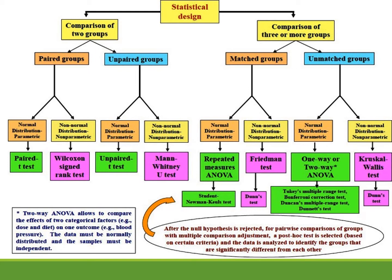This diagram shows a statistical design which allows comparison of two groups or three or more groups. For comparison of two groups, it is divided into paired and unpaired groups. For paired groups, if you have normal distribution — parametric — you use the paired test, also called the dependent test. For non-normal distribution — non-parametric — you use the Wilcoxon signed rank test. As discussed earlier, parametric applies when the outcome variable is interval or ratio, and non-parametric when it is nominal or ordinal.